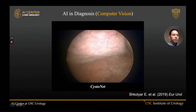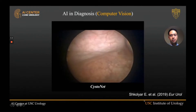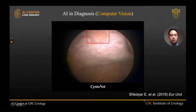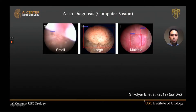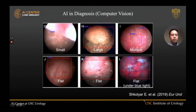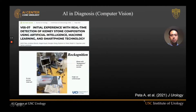Shifting to computer vision endoscopy: in cystoscopy, we look for bladder tumors whether they are small, large, multiple, flat, or even flat under blue light. Computer vision, which is AI-based, can detect these lesions with high sensitivity as well as specificity.